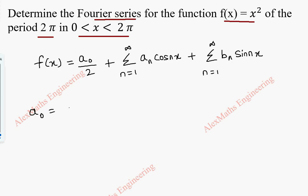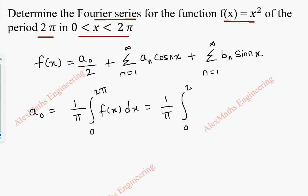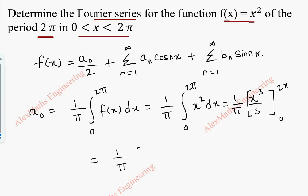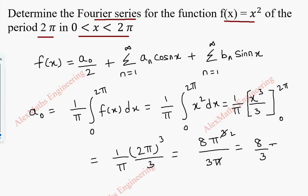To calculate a₀, we are going to use the formula 1 by π, integral 0 to 2π, f of x dx. In place of f of x, we are going to use the function x squared. On integrating this, we get x cubed by 3, with limit 0 to 2π. This gives 1 by π times 2π whole cubed by 3, which is 8π³ by 3π. After cancelling, we are left with 8 by 3 π squared.